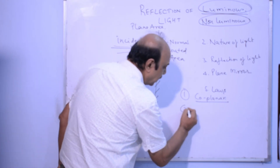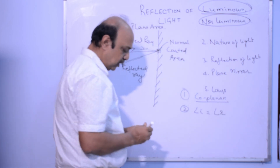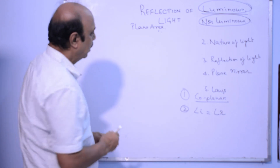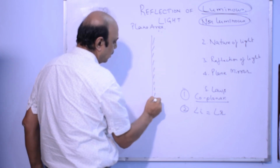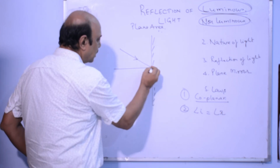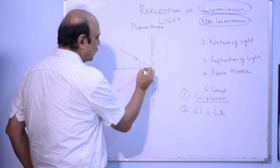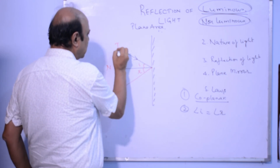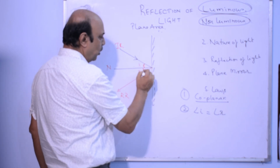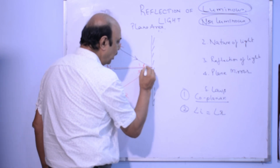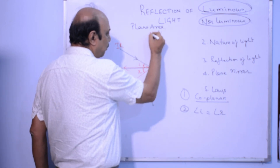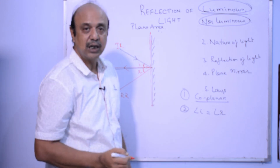The second law says that the angle of incidence is equal to the angle of reflection. The angle between the incident ray and the normal is the angle of incidence, and the angle between the reflected ray and the normal is the angle of reflection. So angle i equals angle r. That means if light falls normally on the plane mirror, it will come back on the same path. If it is travelling parallel to the plane mirror, it will not get reflected because it is not touching the mirror at all.